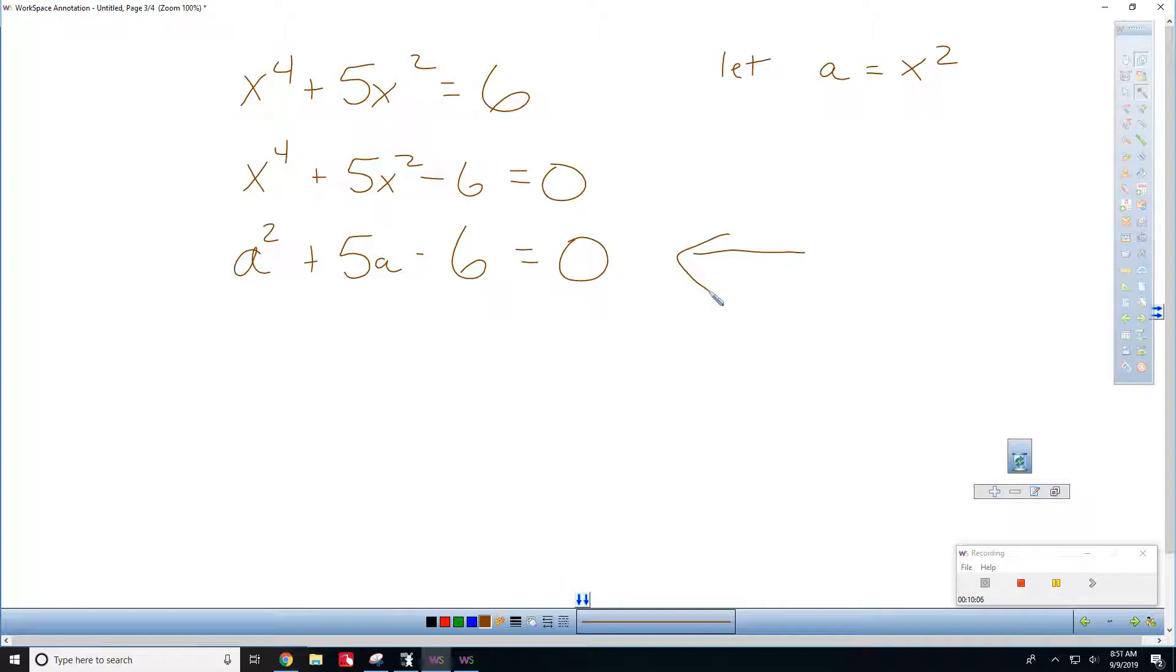So, let's let a equal x squared. That turns this into a squared plus 5a minus 6 equal to 0. Now, look. This is something I'm used to factoring. We're looking for two numbers that multiply to be negative 6 and add to be positive 5. So, that's x plus 6 times x minus 1. Oh, sorry. That should be an a. Excuse me. It should be an a. I'm going to keep my math straight.